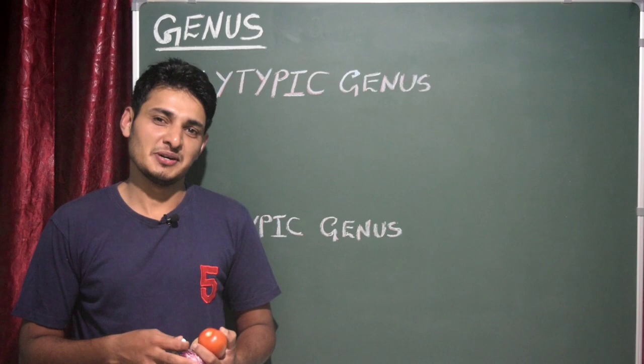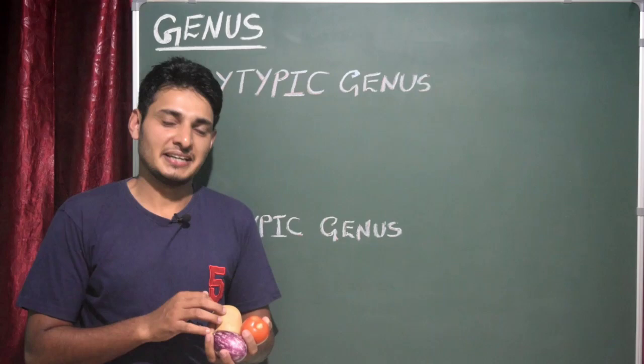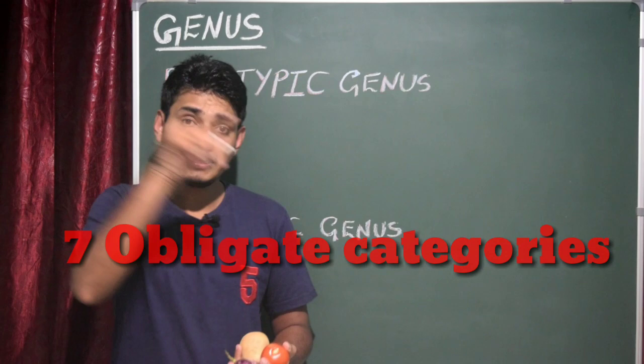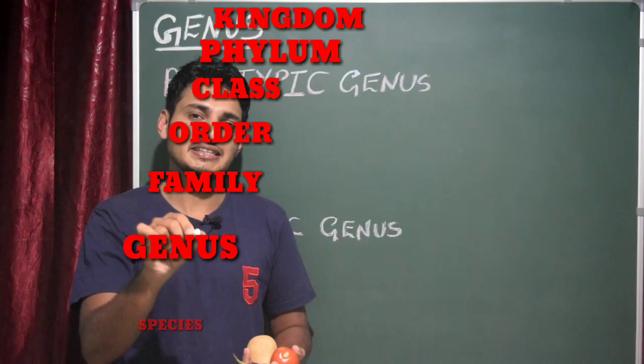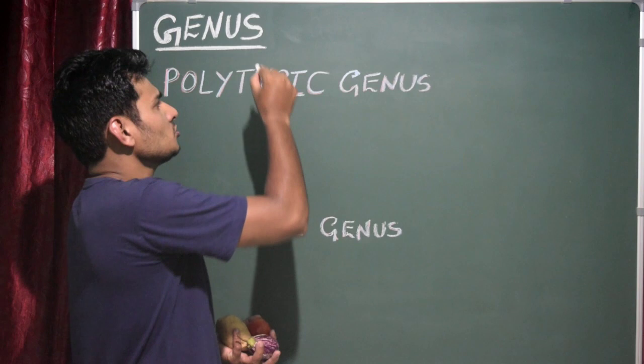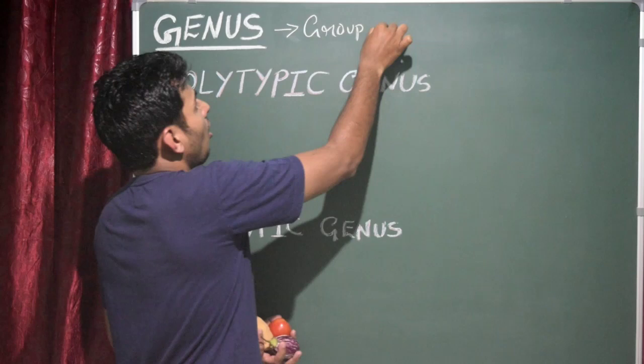Hello everyone, welcome back. I am Arun Kumar. I have different vegetables here — please don't misunderstand me, I'm not going to prepare any recipe. I just want to explain one more concept, that is genus. We have already understood taxonomic hierarchy, which has seven obligate categories: kingdom, phylum, class, order, family, genus, and species. Genus can be defined as a group of related species.